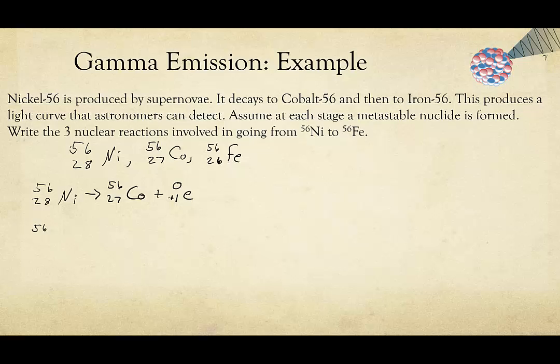Now we can go on to iron-56. We know that the iron-56 portion forms a light curve that astronomers can detect, which means that after it undergoes its first decay, it will undergo gamma emission. And so we're going to make this a metastable nuclei in order to show that it is going to decay again and release gamma radiation.